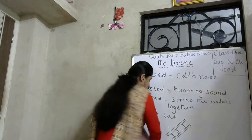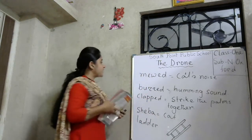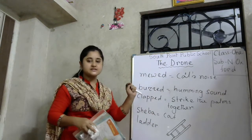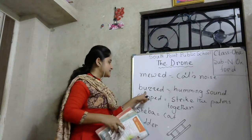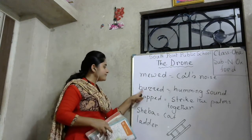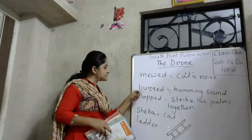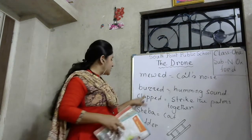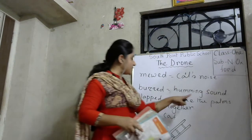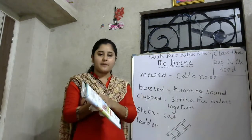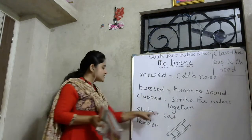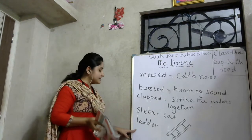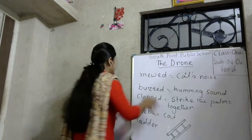Students, you have to learn some spellings. Now look at the word meanings: 'mewed' means cat's noise; 'buzzed' means humming sound — you know, a bee's sound is a humming sound; 'clap' means to strike the palms together; 'Siba' is the name of the cat in this story; 'ladder' is used to climb — it is like stairs.